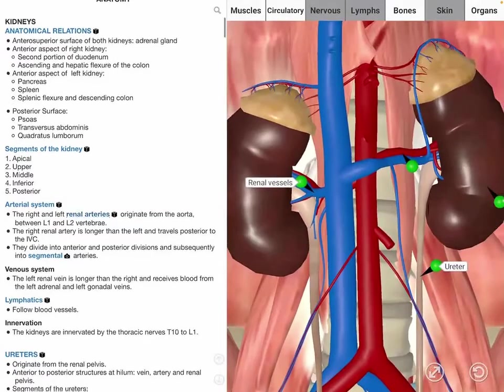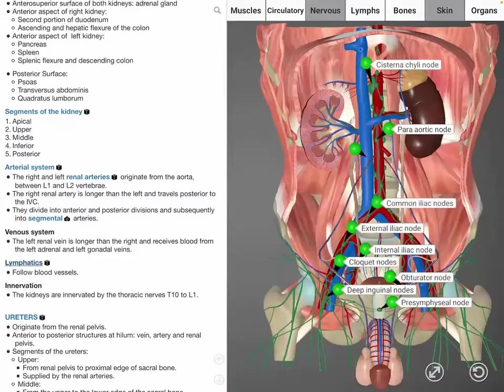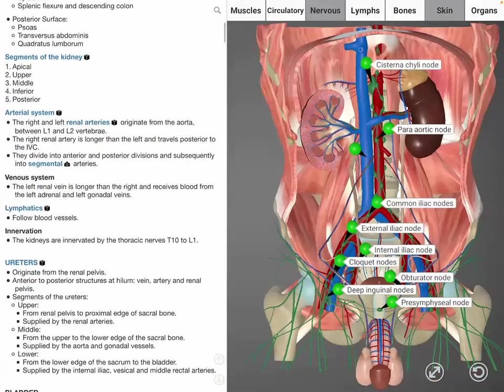The lymphatic drainage also follows the blood vessels, and the kidneys are innervated by vertebral nerves branching from T10 to L1.